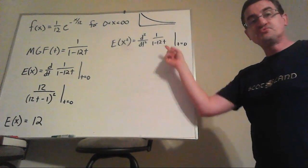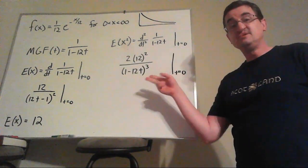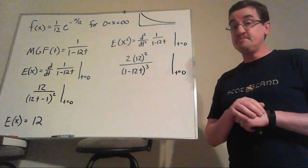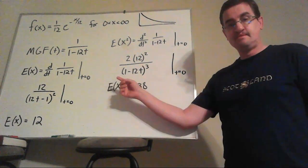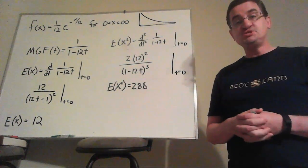The second moment, we need the second derivative. Well, we already have one, so we just need the derivative of that. And I'll do these derivatives all day before I'm eager to do another one of those integration by parts. Set this t to zero and we get our second moment as 288.